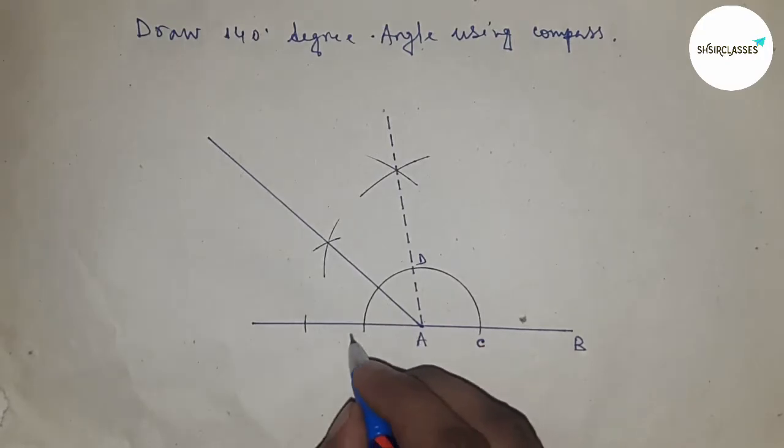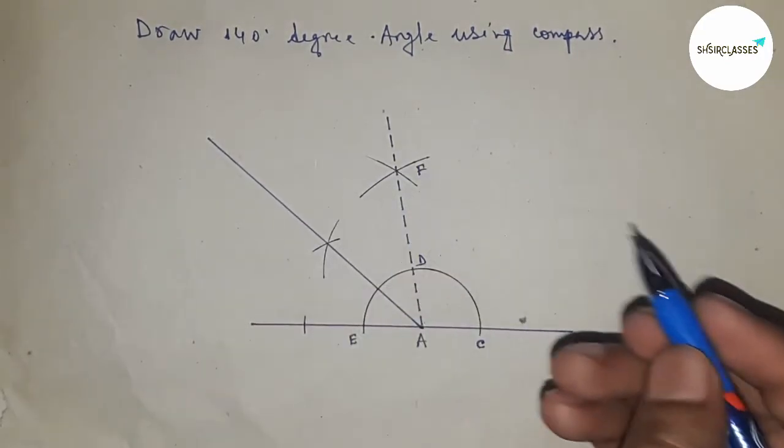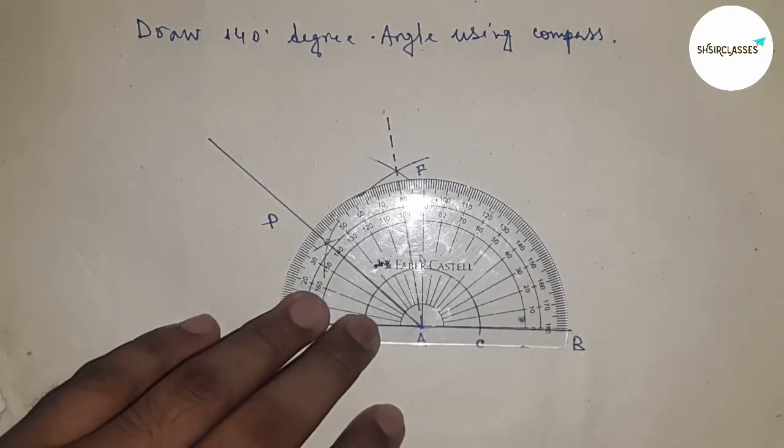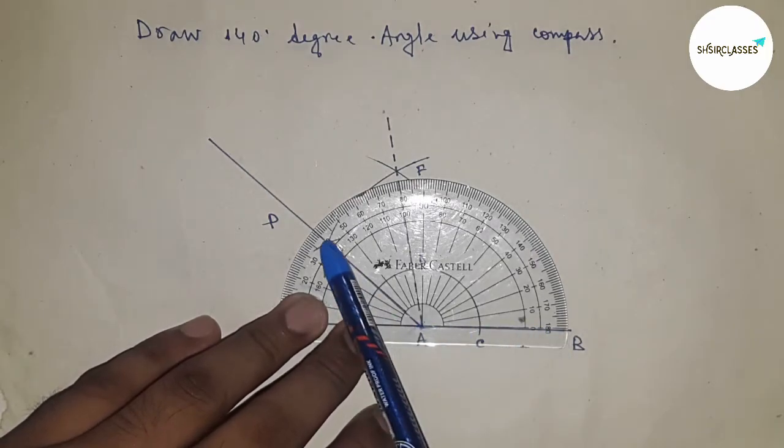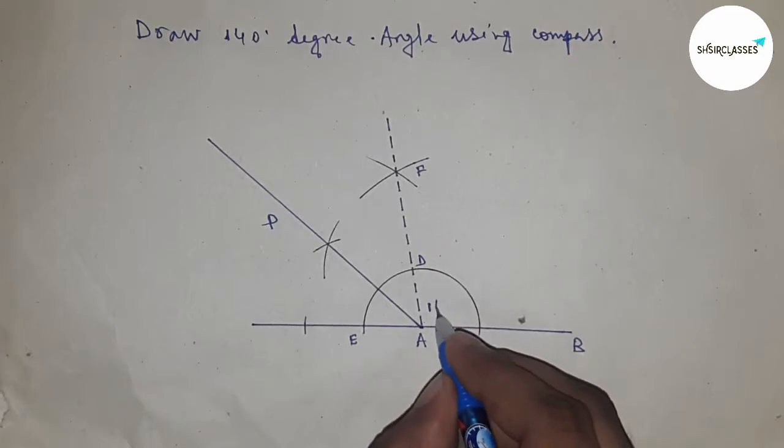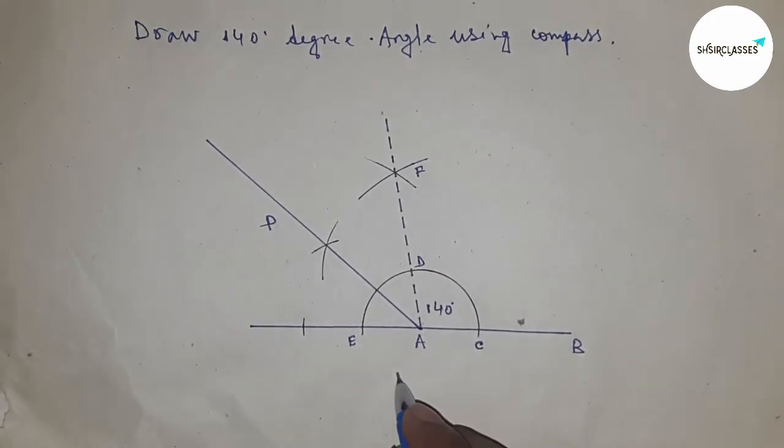So this is point C, this is D, E, F, P point. Now checking the angle PAB. So this is perfectly 140 degree angle. Angle PAB equals 140 degrees.